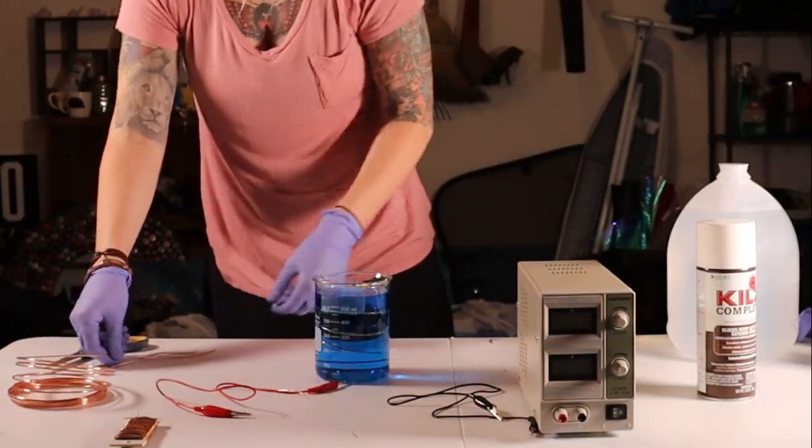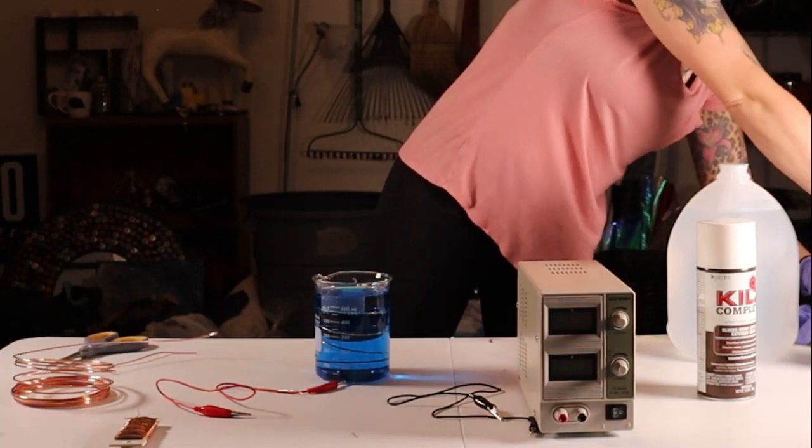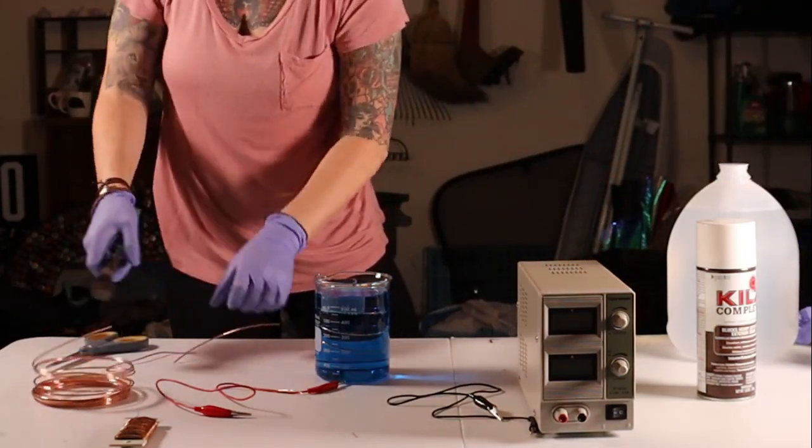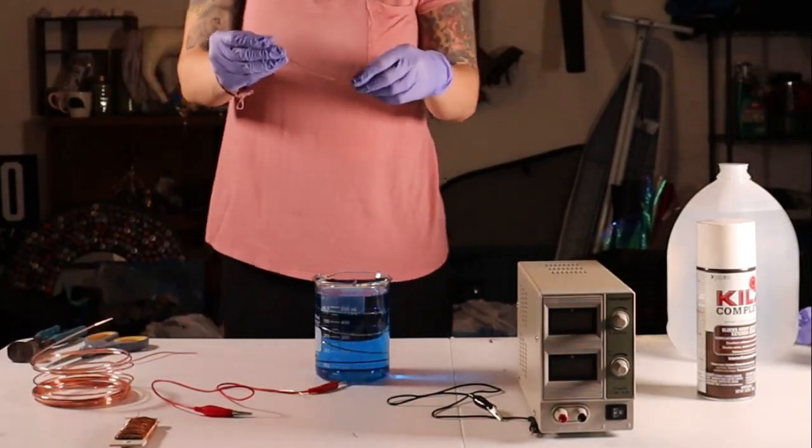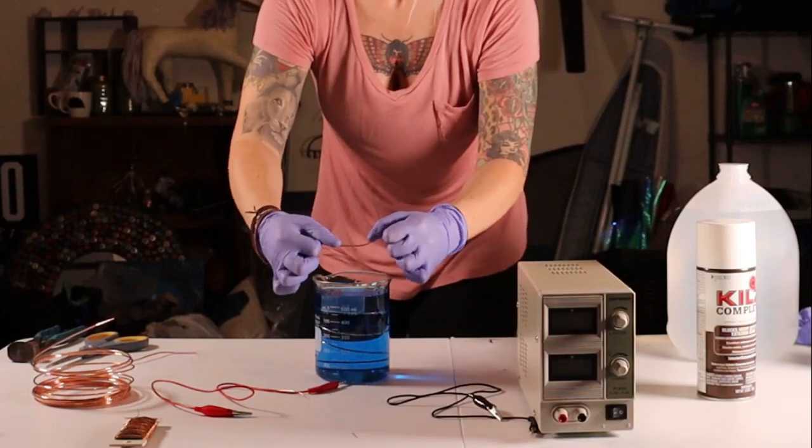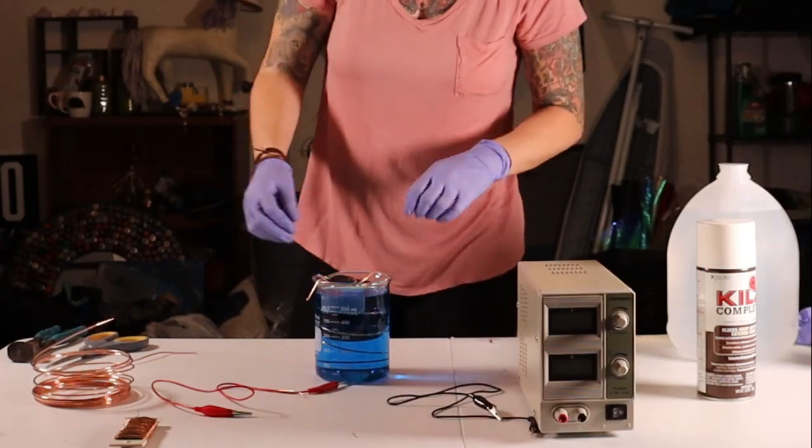Okay, now what I'm doing is making the bus bar. So I'm going to cut my 16 gauge wire and I would say maybe to leave about an inch on each side of the beaker and you bend it to make it match the top of your beaker.